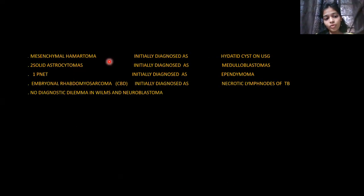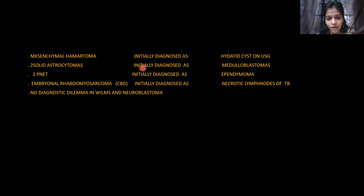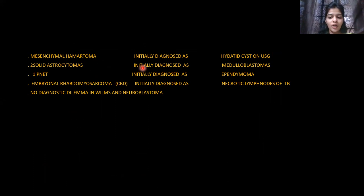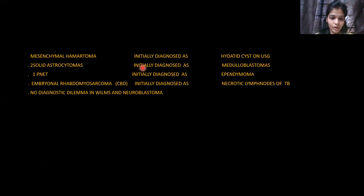Regarding how embryonal tumours were initially misdiagnosed: in the mesenchymal hamartoma case, the child presented with abdominal distension. On ultrasound, there was a multiloculated lesion in the liver, initially thought to be a hydatid cyst, and an amoebic abscess was reported. On contrast CT, enhancing components of the lesion were identified, raising suspicion of a tumour. Biopsy confirmed it as mesenchymal hamartoma.